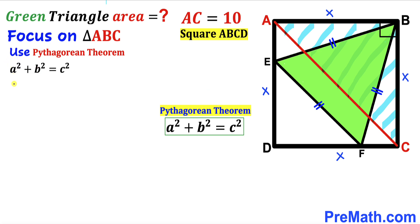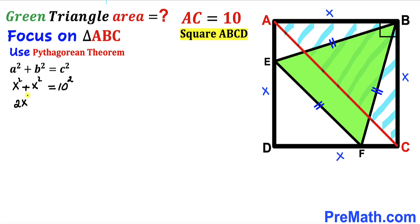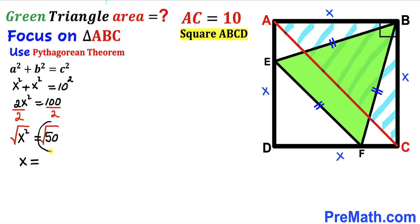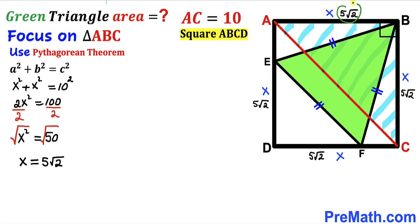Filling in the Pythagorean formula, we get x² + x² = 10², which simplifies to 2x² = 100. Dividing both sides by 2, x² = 50. Taking the square root of both sides, x = √50 = 5√2 units. So the side length of this square turns out to be 5√2 across the board.